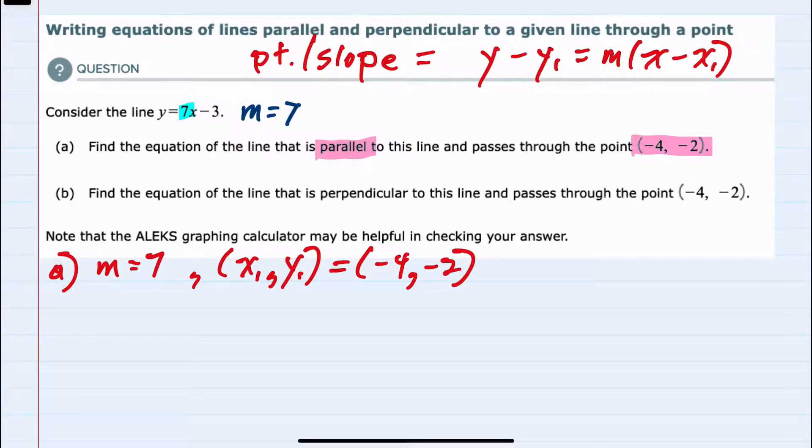I can substitute into the point-slope formula from here and have y minus y sub 1, which is minus negative 2, so plus 2, equals m which we've identified as 7, times x minus x sub 1 which is minus 4, so minus a negative 4 would be plus 4.